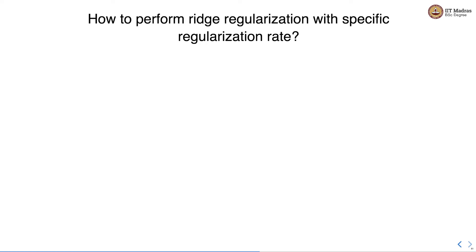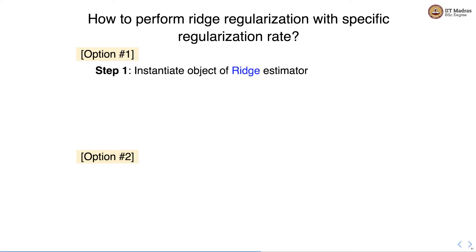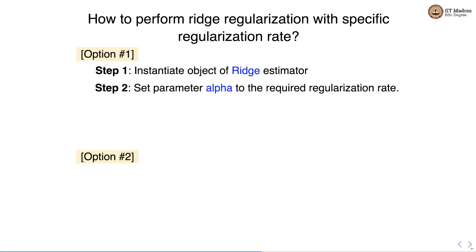Let's first see how to implement Ridge regularization with sklearn. We'll first perform Ridge regularization with a specific regularization rate. There are two options to specify Ridge regularization in sklearn. As the first option, we can instantiate an object of the Ridge estimator and set the parameter alpha to the required regularization rate.